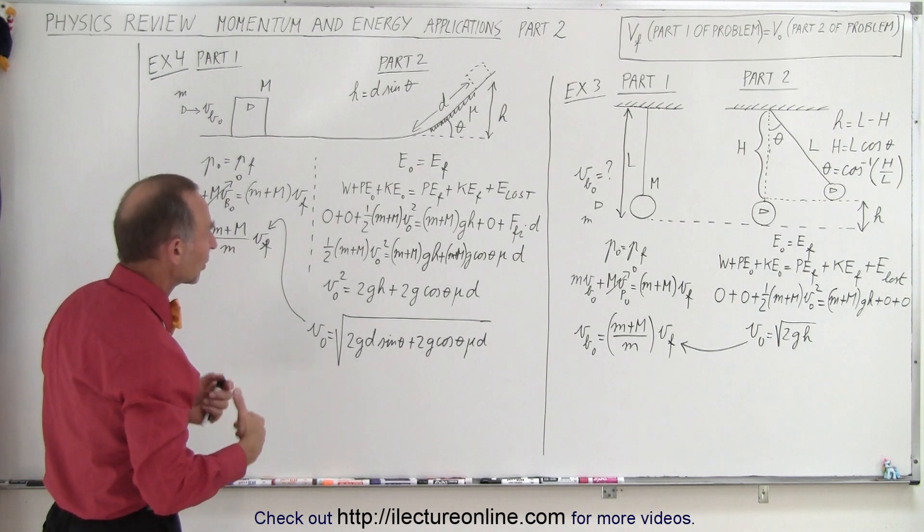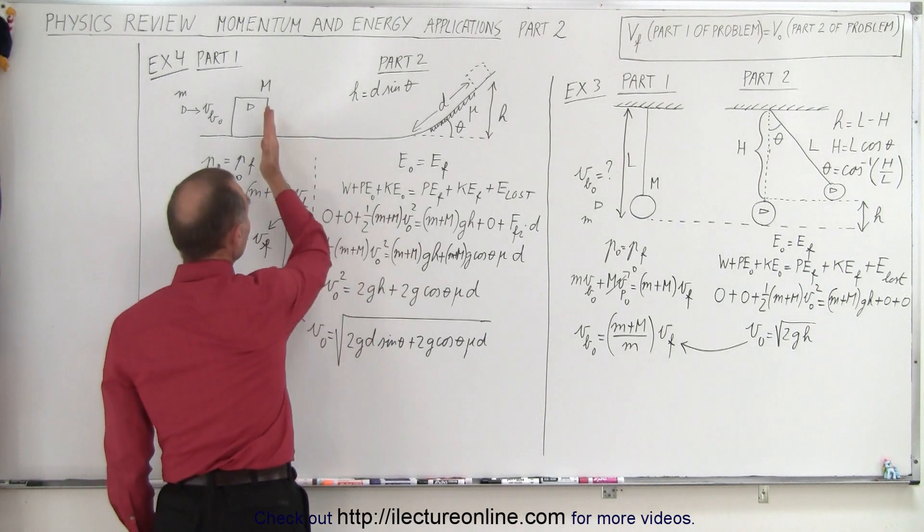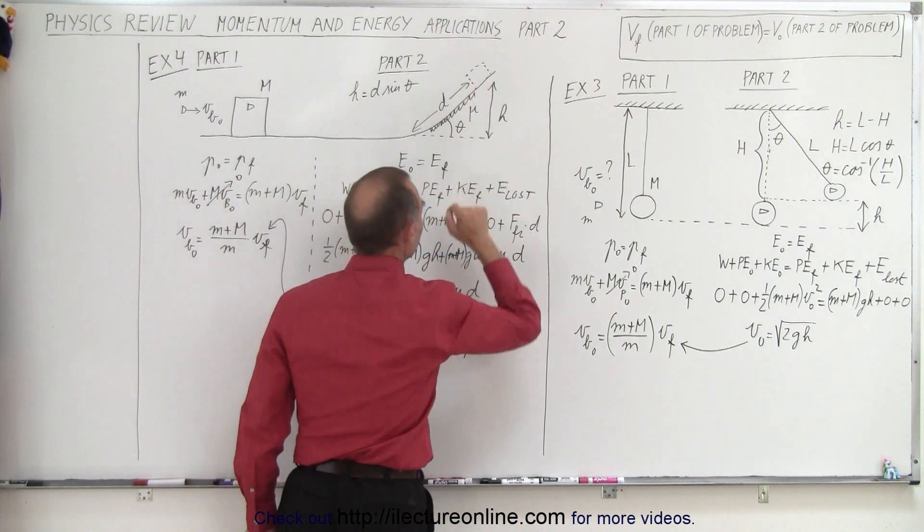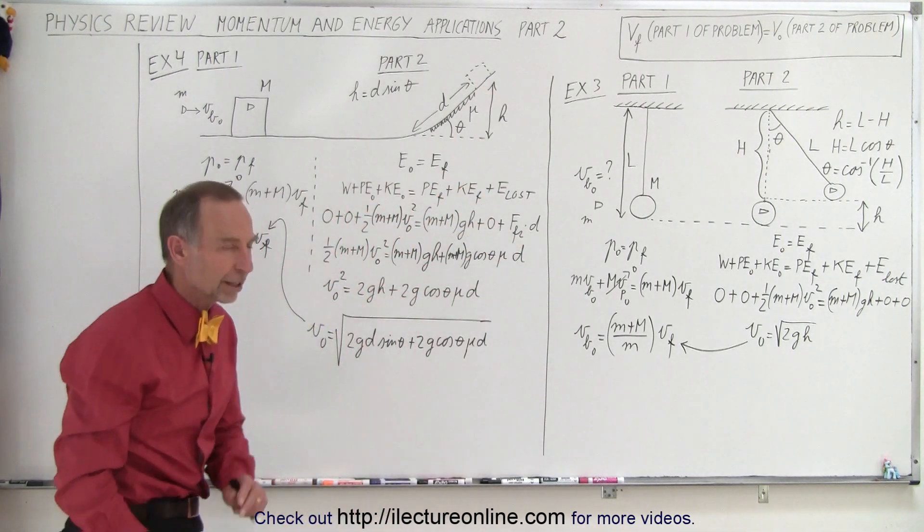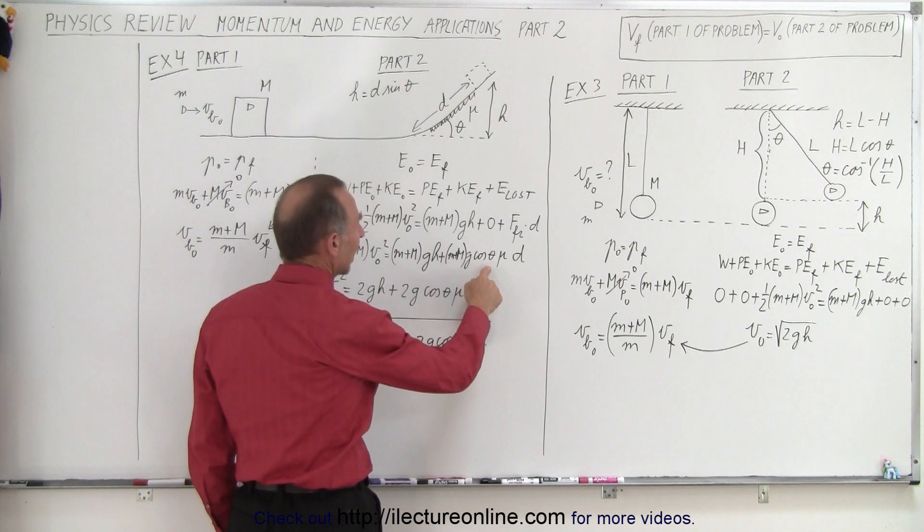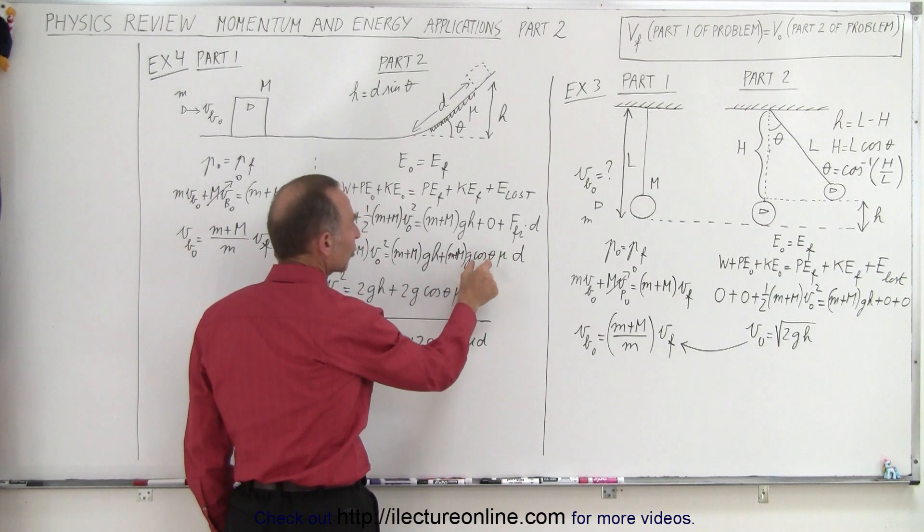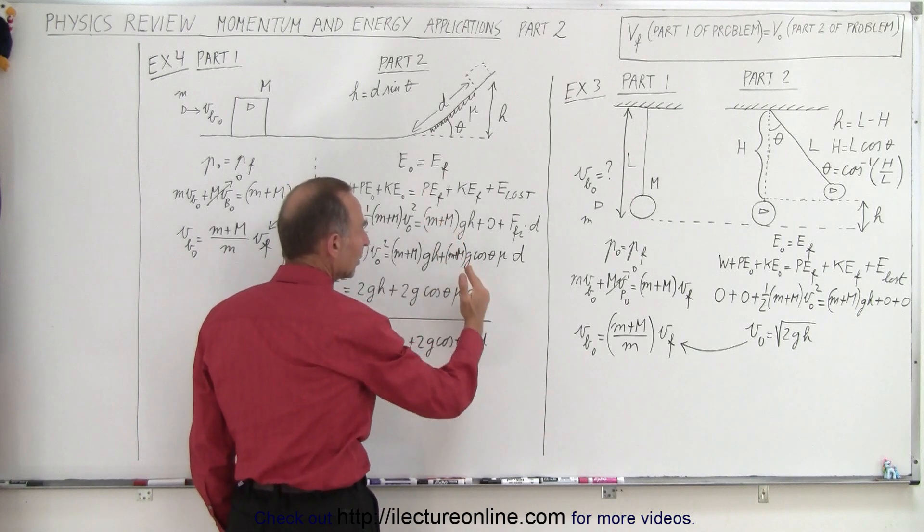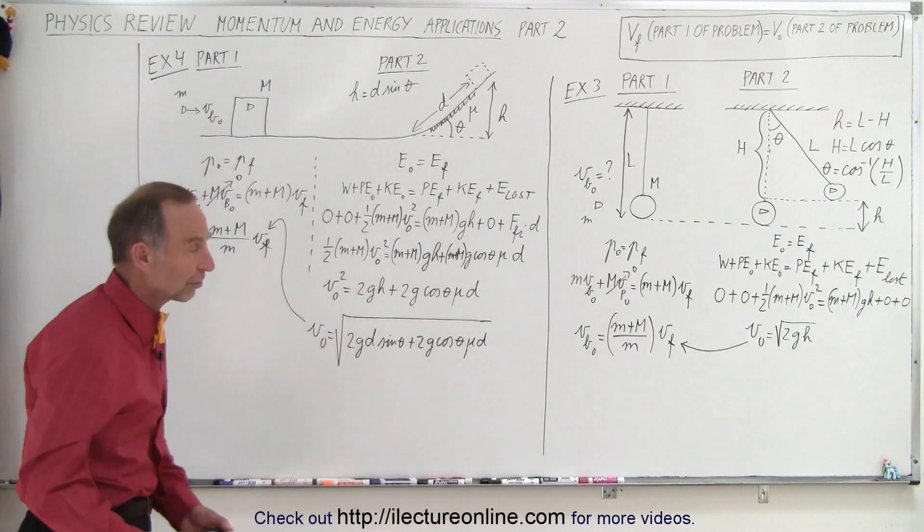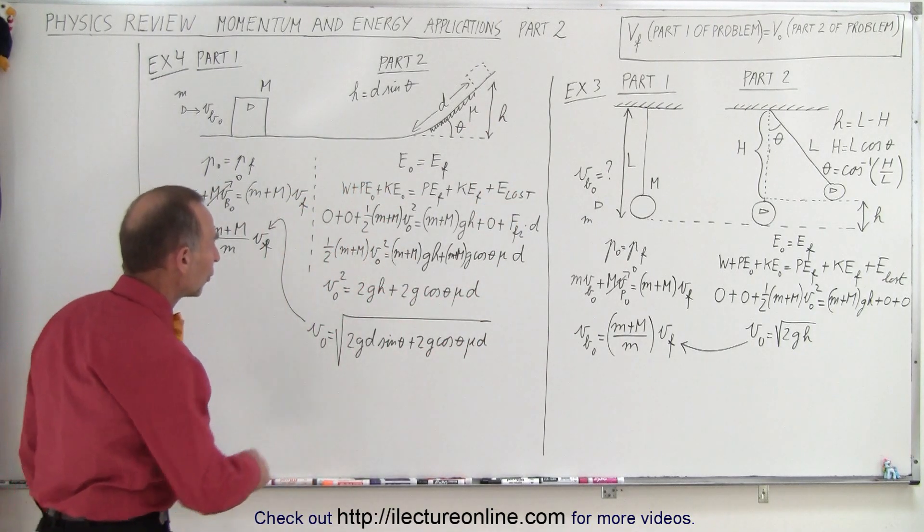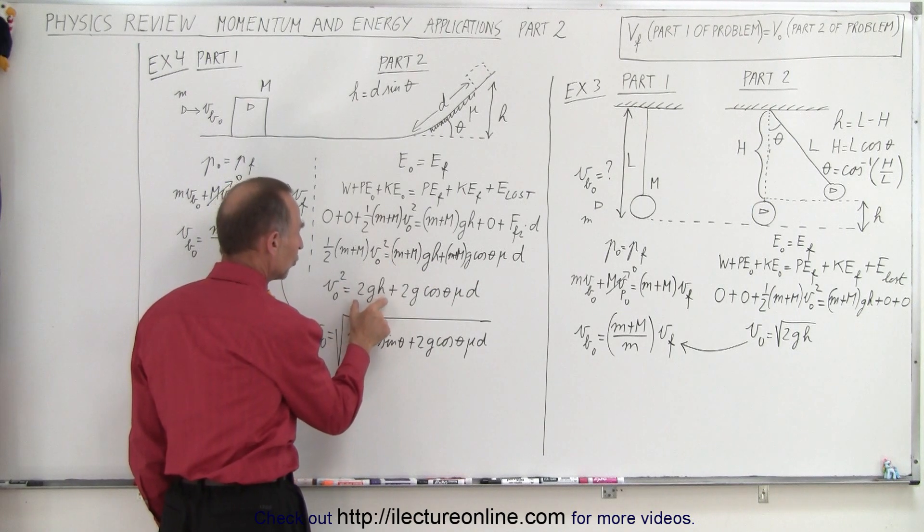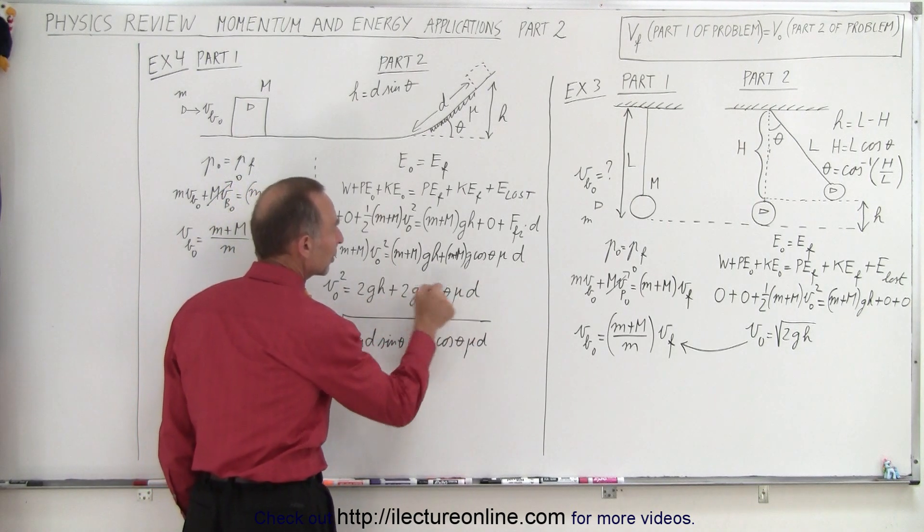Now, on the right side, we have the conservation of energy. We have the initial kinetic energy right after the collision. The block and the bullet are moving. Then we have the potential energy gain when the block comes to the stop of the incline, but we also lost energy due to friction on the incline. So when we solve for the friction on the incline, we have the weight, mg, times the cosine of the angle, which is the perpendicular component of the weight, times the coefficient of friction, times the distance it travels along that incline, because that's the work to overcome friction. Notice we have the mass on every term, so that cancels out. We've multiplied everything by 2, so the initial velocity squared is 2gh plus 2g times the cosine of theta mu times d.